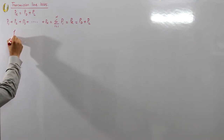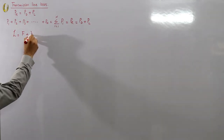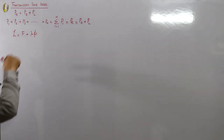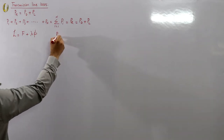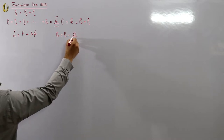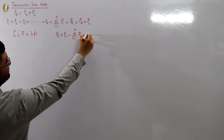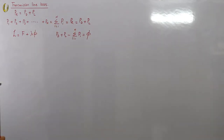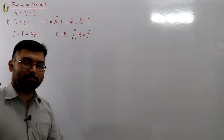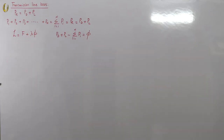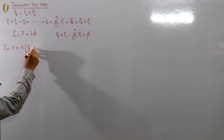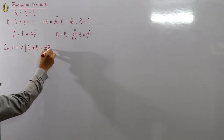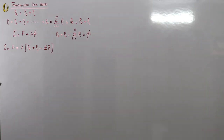The Lagrange function again is: L = F + λ·Φ, where λ is the incremental cost and Φ is the constraint. Here Φ = PD + PL minus the summation of the power dispatched, which equals zero — but Lagrange says put it equal to Φ. So the full Lagrange function is: L = F + λ·(PD + PL − ΣP), giving the total power generated.